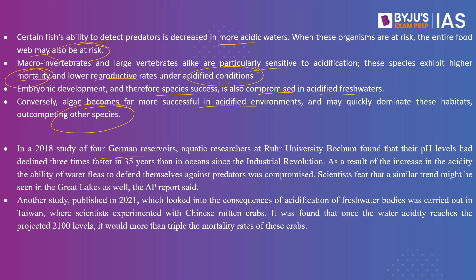A 2018 study of four German reservoirs by aquatic researchers at Drew University found that their pH levels had declined three times faster in 35 years than in oceans since the industrial revolution. As a result of increased acidity, water fleas were not able to defend themselves against predators, and scientists fear a similar trend might be seen in the Great Lakes. Another study published in 2021 in Taiwan, experimenting with Chinese mitten crabs, found that once water acidity reaches projected 2100 levels, it would more than triple the mortality rate of these crabs.